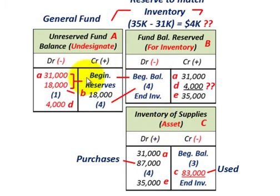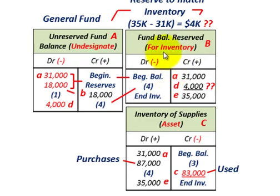That covers our example for governmental accounting for inventories. Note that this same approach applies to other accounts that can't be converted to cash — you set up a special fund balance reserve for whatever item you're dealing with. We looked at how to set aside encumbrances and fund balance reserves for inventories.